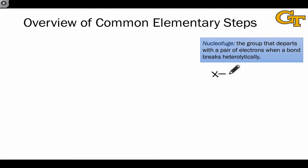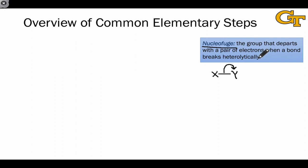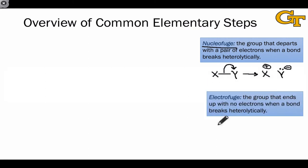When a bond breaks heterolytically — meaning both electrons of the bond go to one of the two atoms involved — the atoms end up with different fates. X increases in formal charge since it's losing electrons, while Y decreases in formal charge because it's gaining electrons. The group Y is called the nucleophuge, because it's departing with a pair of electrons, effectively becoming a nucleophile. If XY begins neutral, the result is X-plus and Y-minus. The group that ends up with no electrons, X, which becomes X-plus, is referred to as the electrophuge, because it becomes an electrophile after heterolytic cleavage. You'll see these terms in the names of the elementary steps.